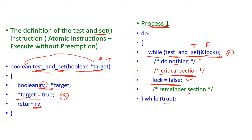Let us check how process 1 locks the critical region. Initially, the target value is 0 — false. So if the target value is false, then rv will also be false. After that, we change the target to true, and rv will be returned. Since rv is false, false will be returned to the while loop condition. The while condition is false, so control enters the critical region and executes it. After completing, the lock is changed to false — meaning the target value becomes false — and then the remainder section executes.